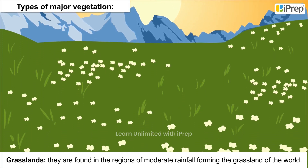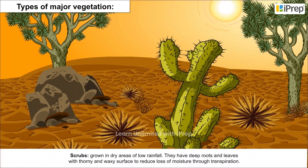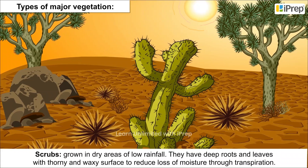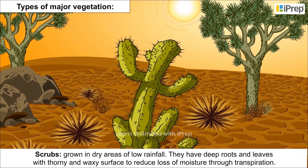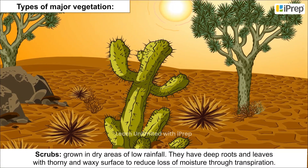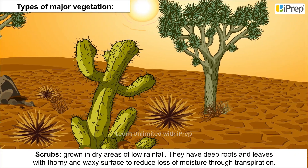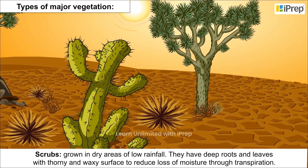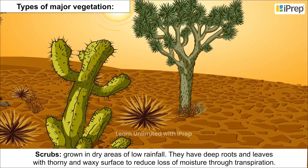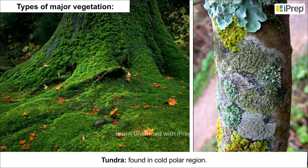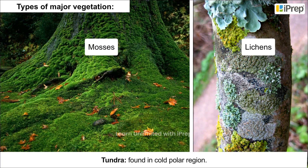Scrubs grow in dry areas of low rainfall. They have deep roots and leaves with a thorny and waxy surface to reduce loss of moisture through transpiration. Tundra is found in cold polar regions; examples include mosses and lichens.